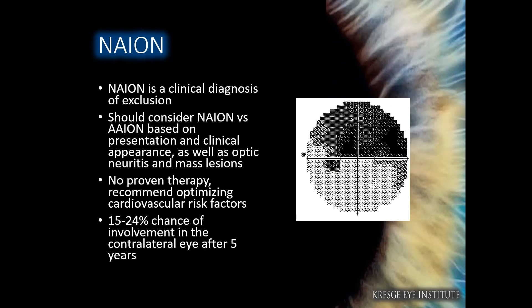NAION is a clinical diagnosis of exclusion. It is important to consider NAION versus AAION based on presentation, clinical appearance, optic disc, neuritis, and mass lesions. There is no proven therapy for NAION, but we recommend optimizing the patient's cardiovascular risk factors. There is a 15–24% chance of involvement of the contralateral eye after 5 years.